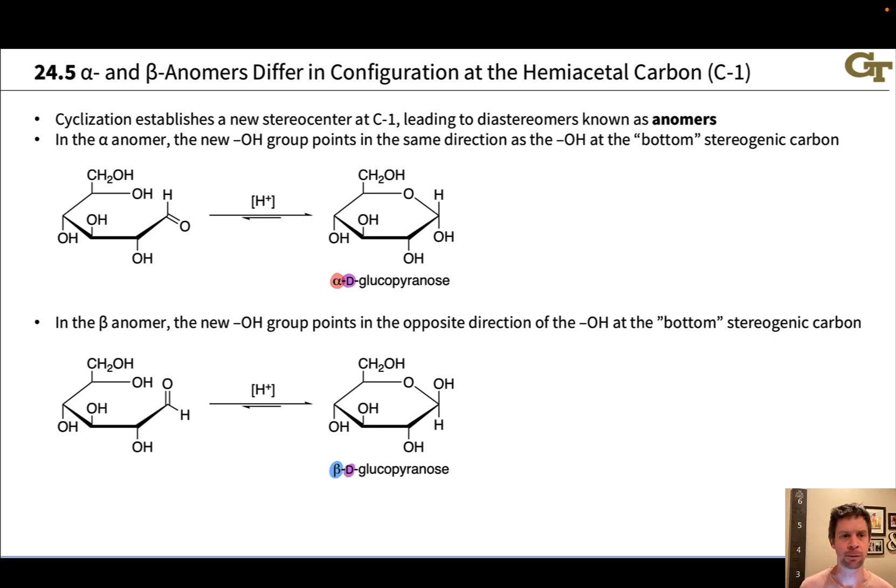So how do these different anomers come about? Well, let's imagine we rotated around the C1-C2 bond, swinging the aldehyde carbonyl group up, so the carbonyl oxygen is pointed up. This actually exposes a different face of the carbonyl group to the nucleophilic hydroxyl group. So here we have the back face exposed to that hydroxyl. But if I turn over the aldehyde, now the opposite face of the carbonyl group is pointed towards that hydroxyl group. And so we're going to end up with a different configuration at the new stereocenter after this rotation. And this is how the two different anomers come about.